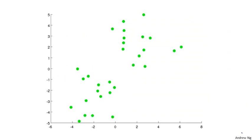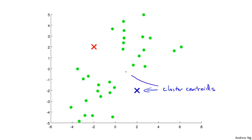The k-means clustering algorithm is best illustrated in pictures. Let's say I want to take an unlabeled data set like the one shown here and I want to group the data into two clusters. If I run the k-means clustering algorithm, the first step is to randomly initialize two points called the cluster centroids. I have two of them because I want to group my data into two clusters. K-means is an iterative algorithm and it does two things: first is a cluster assignment step, and second is a move centroid step.